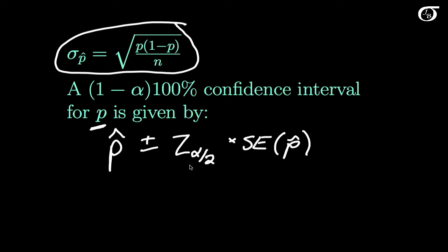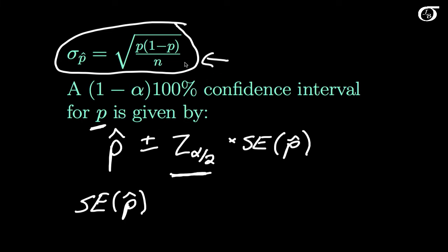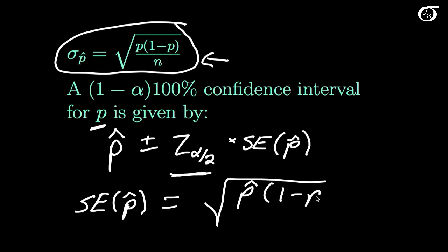The standard error of p-hat is our estimate of the standard deviation of p-hat. Ideally we'd use the true value of p, but since we don't know p, we substitute our best guess — p-hat. So the standard error of p-hat is the square root of p-hat times (1 minus p-hat) over n, which is the true standard deviation with p replaced by our sample proportion.